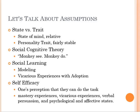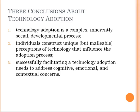There's also the idea of self-efficacy — that's an individual's perception that they can do this new thing, that they can use this new technology and are capable of using the innovation the way it's supposed to be used. People's perceptions can change over time; perceptions are often much like a state. So what you want to do is provide different experiences for them to learn to master the technology in a positive way. Straub provides three conclusions about technology adoption: adoption is complex, it's inherently social, and it happens over time.